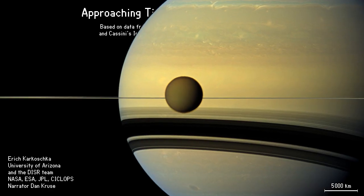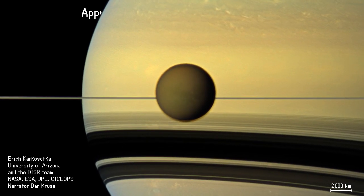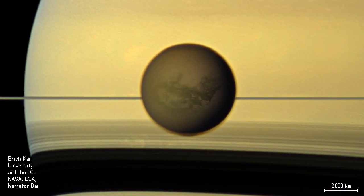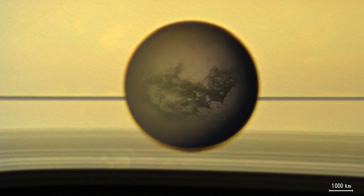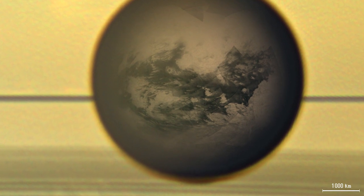Saturn's atmosphere shows a banded structure and a number of storms. We view the edge of Saturn's gigantic ring system. The rings cast major shadows onto Saturn's southern hemisphere. Titan is surrounded by a partially transparent brown haze.